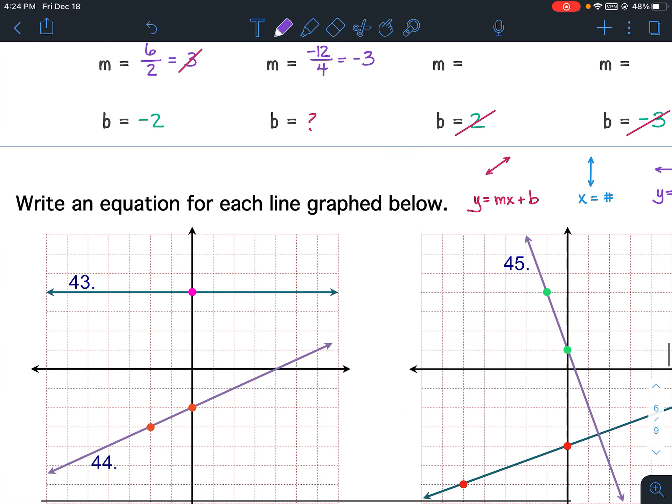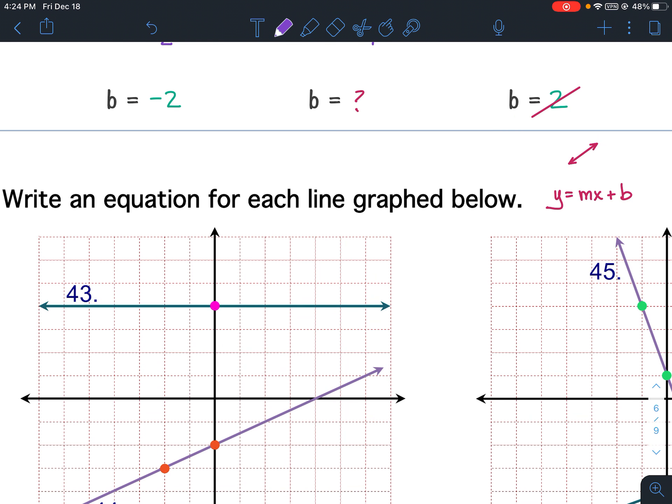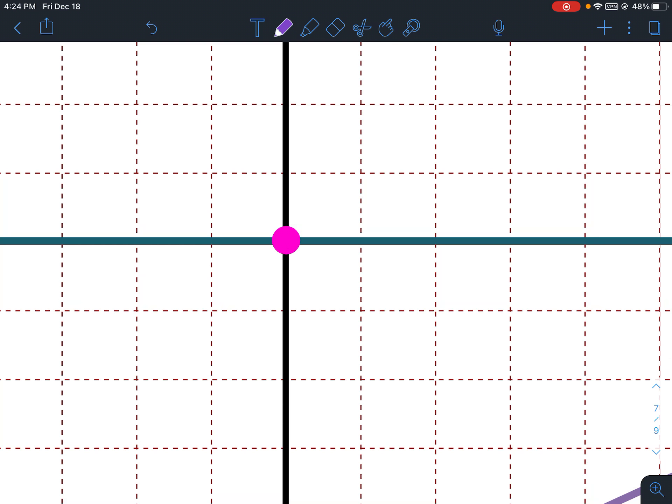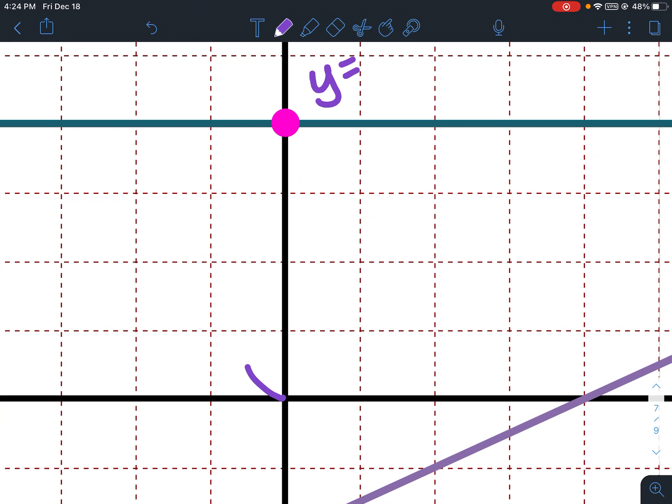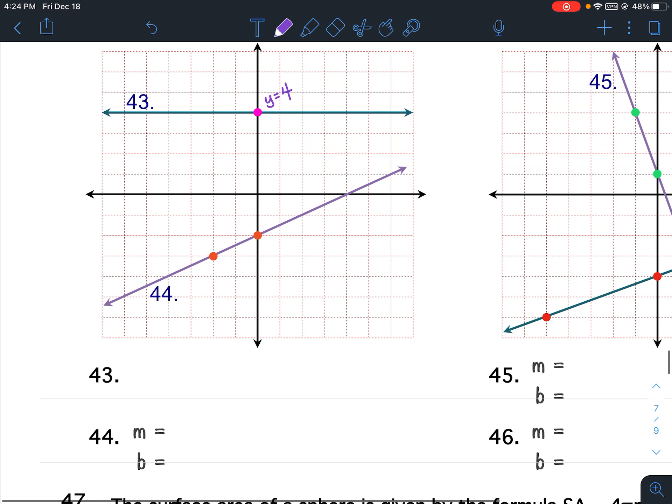So let's start with 43. 43 is definitely not a slanted line, it is a horizontal line. Horizontal lines only cross the y-axis. So we have to figure out, what does y equal? 1, 2, 3, 4. Going up is positive, so y equals positive 4. And that is it, you are done with 43. That is your equation right there.